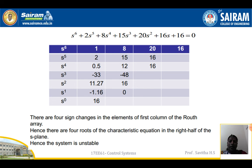Third example: s^6 + 2s^5 + 8s^4 + 15s^3 + 20s^2 + 16s + 16 = 0. Since s^6 is even, the first row is: 1, 8, 20, 16; and the second row is: 2, 15, 16, 0. We calculate s^4, s^3, s^2, s^1, and s^0 rows according to the formula. As seen in the diagram, there are 4 sign changes in the first column of the Routh array. Therefore, there are 4 roots of the characteristic equation in the right half of the s-plane, and the system is unstable.